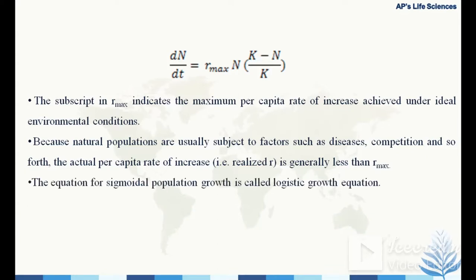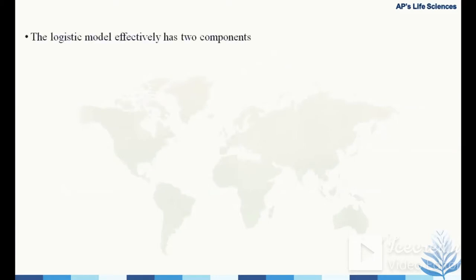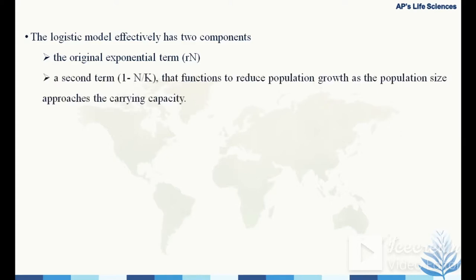The equation for sigmoidal population growth is called the logistic growth equation: dn/dt = r·N·(K − N)/K. The logistic model has two components: the original exponential term r·N, and a second term (1 − N/K) or equivalently (K − N)/K, which functions to reduce population growth as the population size approaches the carrying capacity.